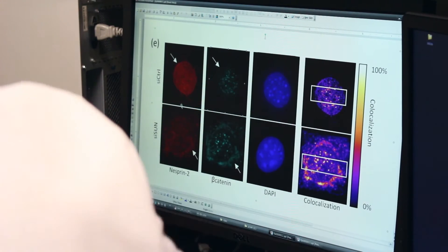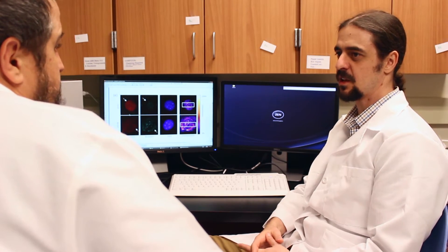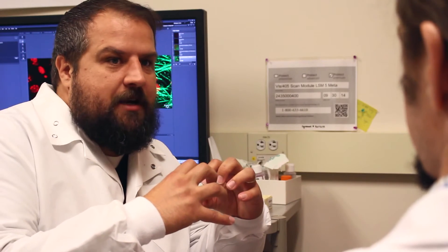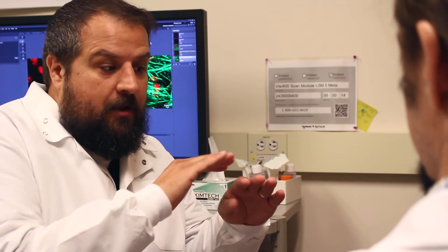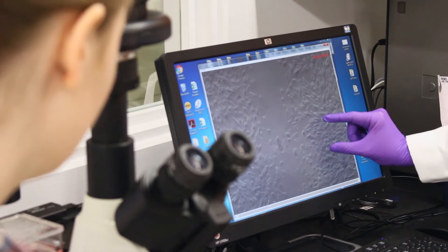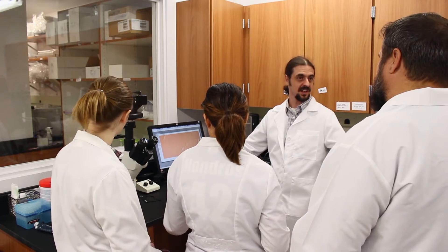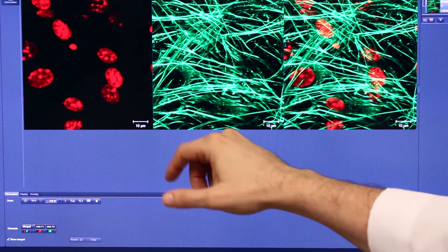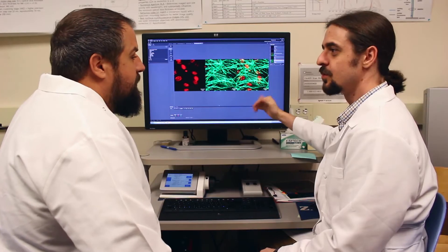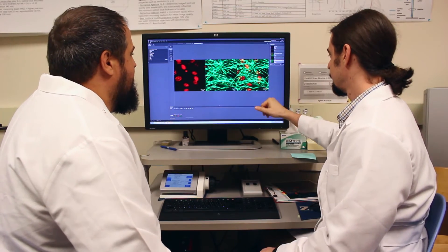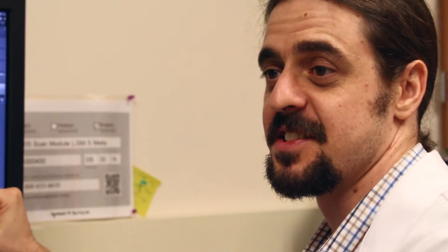We found that there are protein complexes on the nuclear surface called linker proteins that connect the nucleus to the outside world. We tested how these protein complexes might play a role in how mechanical signals are sensed, so we specifically deleted those protein complexes to test if they play a role in the mechanosensitivity of stem cells.